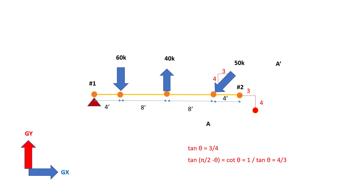Now, what is this reference point that we have drawn in red, and why are we talking about it? This reference point will be used to define the axis system about which we would define the inclined support system. We will explain that in a moment, but before we do that, we need to explain the three different ways available in StatPro by which we can define the reference point.